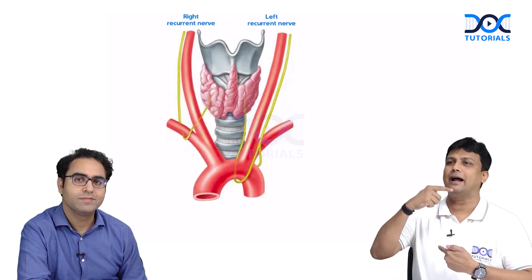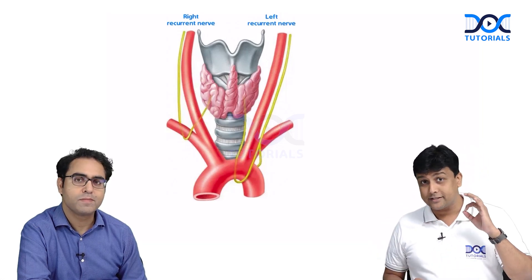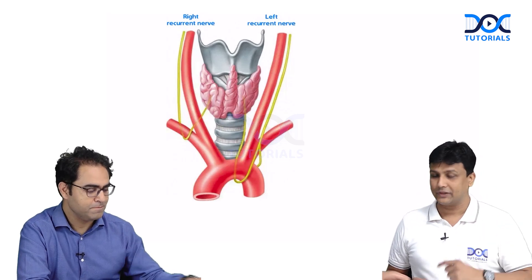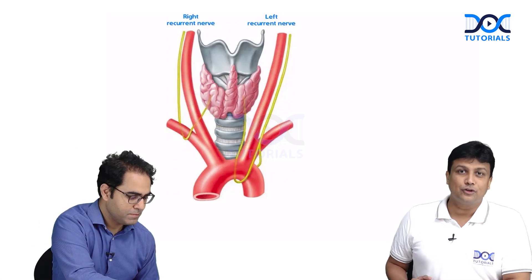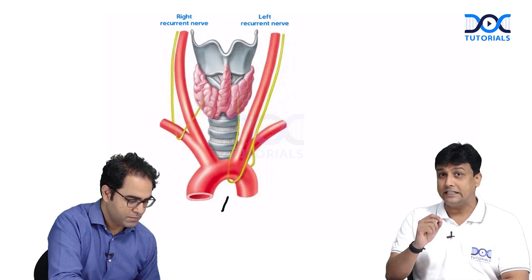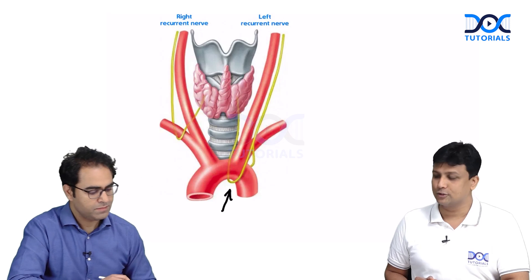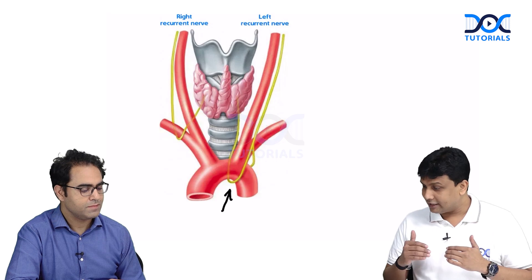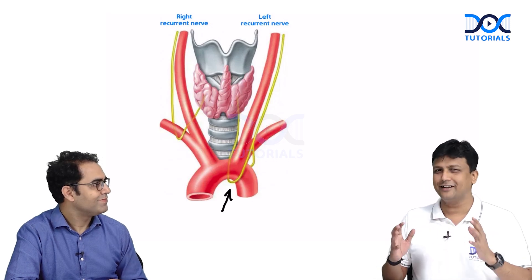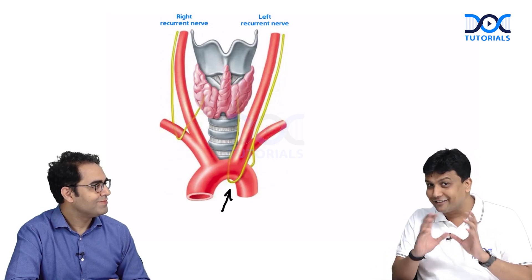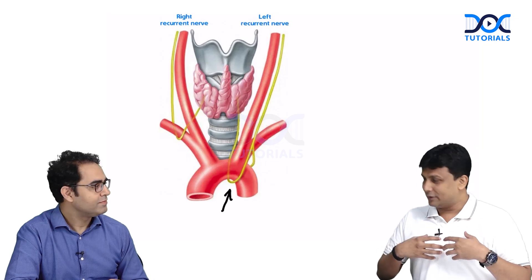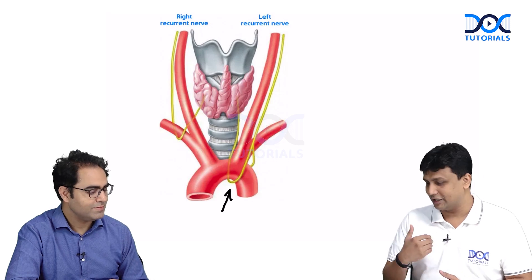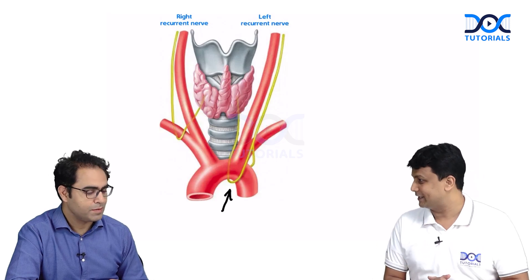The name itself says 'recurrent' — it comes back to the larynx. Whereas the left recurrent laryngeal nerve goes down and takes a turn around the arch of aorta, near the ligamentum arteriosum. That is the place where it turns. In rheumatic heart disease, when there is cardiomegaly, this nerve is very nearby and there are chances it might get compressed.